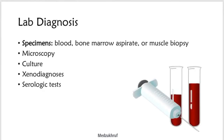Lab diagnosis: specimens needed include blood, bone marrow aspirate, or muscle biopsy. We then perform microscopy to look for trypomastigotes and amastigotes, followed by culture to grow the organism, then xenodiagnosis, and serologic tests for antibodies.